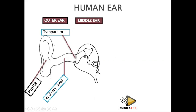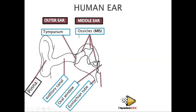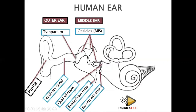The middle ear is made up of three bones called ossicles: the malleus, the incus, and the stapes. It also has the Eustachian tube, which connects to the mouth — so when you yawn, you feel air going through the ear because of the Eustachian tube. There is also the oval window, which is oval-shaped, and the round window, which is round-shaped.